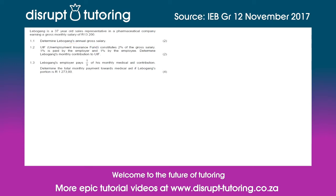They've told us what her monthly salary is, but now they're asking us to calculate her annual salary. We know that annual means her yearly salary and there are 12 months in a year, so we need to multiply her monthly salary by 12. For question 1.1, it's simply 13,200 multiplied by 12, which comes to a total of 158,400 Rand.